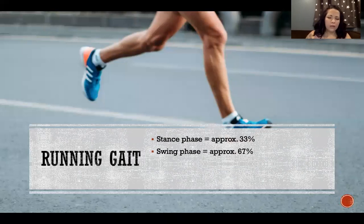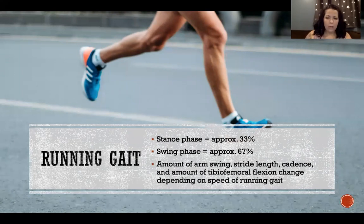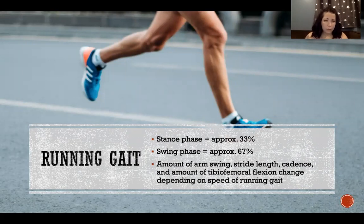Stance phase during running is about 33 percent stance and 67 percent swing phase, which of course in walking gait was about 60 percent stance and about 40 percent swing.